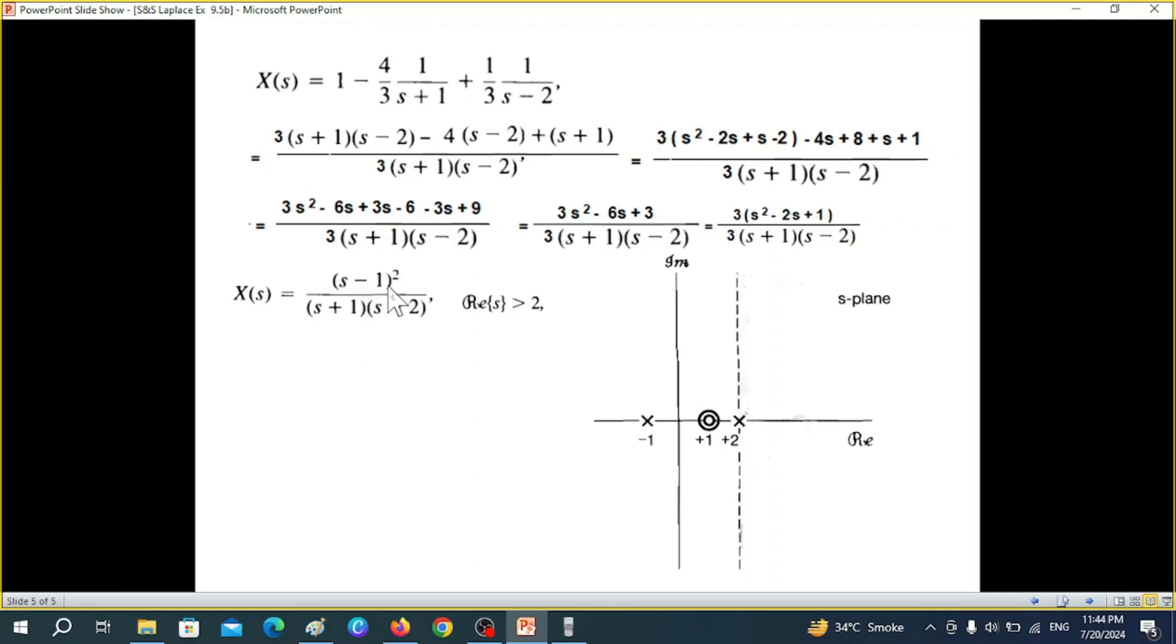So s minus one equal to zero, that means that s is equal to one. There will be two zeros because of the square. So s is equal to plus one. We have put in two zeros.